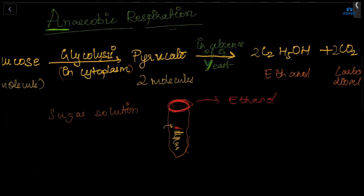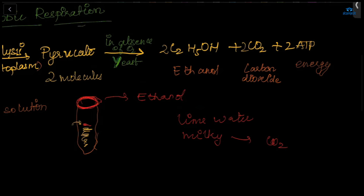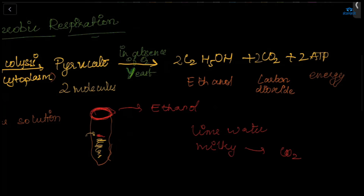To identify which gas is evolved, pass it through lime water. The lime water will turn milky white, confirming the presence of carbon dioxide. This experiment shows the products of yeast fermentation: pyruvate is broken down into ethanol, carbon dioxide, and energy, and this is called yeast fermentation.